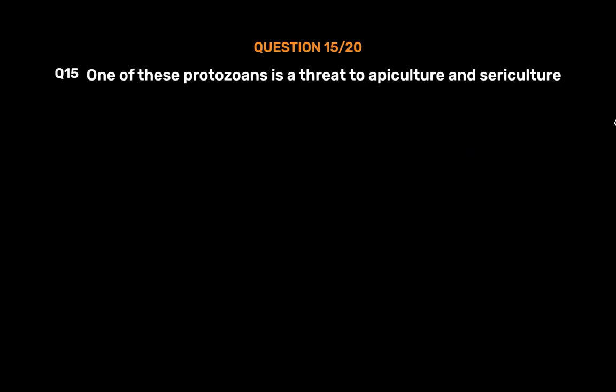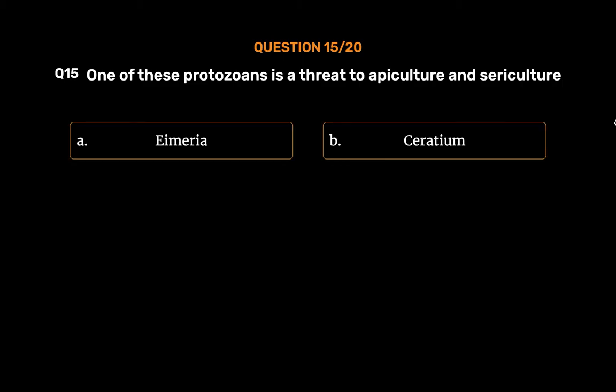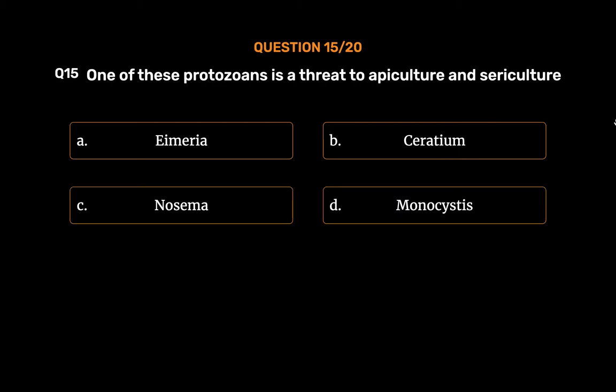Question 15: One of these protozoans is a threat to apiculture and sericulture — Option A: Eimeria. Option B: Ceratium. Option C: Nosema. Option D: Monocystis.